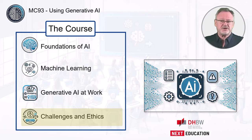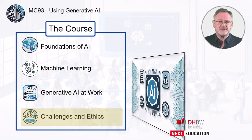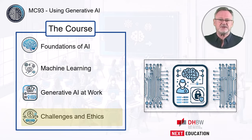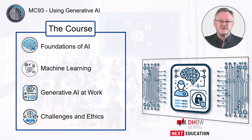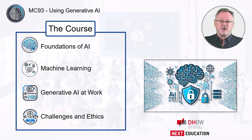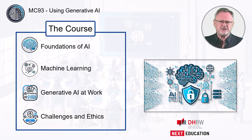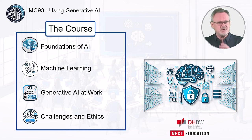Our final section addresses the challenges associated with AI in general and with generative AI in particular, focusing on issues like bias, discrimination, data protection, privacy, and potential misuse. We discuss the importance of critically engaging with and continuously developing these technologies to maintain their ethical use.